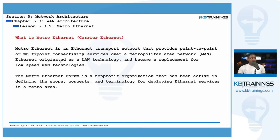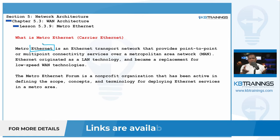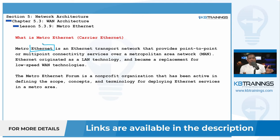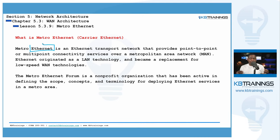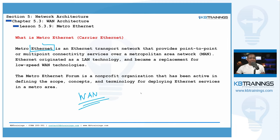Metro Ethernet, as the name says, is an Ethernet-based network transport that can be deployed in a WAN. In the past we saw technologies like T1, E1, and so on — those are ways to create leased lines. With Metro Ethernet you can also create dedicated or private lines between different locations using Ethernet. Ethernet was originally for local area networks but is now being extended to apply to a WAN or metropolitan area network.